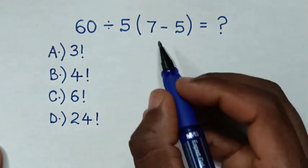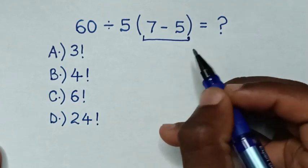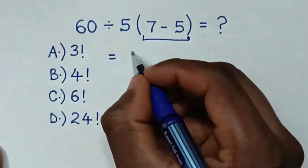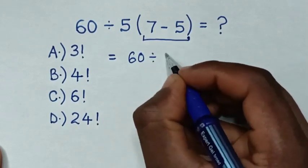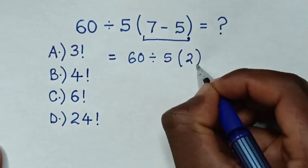So, from these operations, we start to deal with this operation inside the bracket. Then, it will be equal to 60 divided by 5, then bracket, 7 minus 5 is 2, bracket.